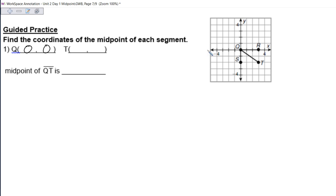And T is right 3, so positive 3, and down 2, so negative 2. So 3, negative 2.